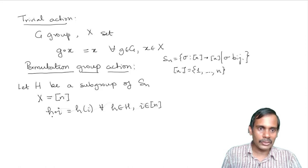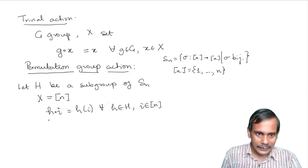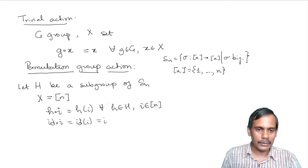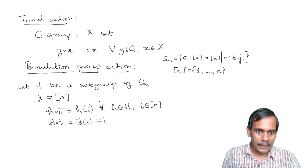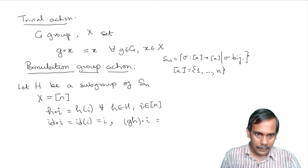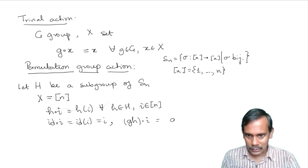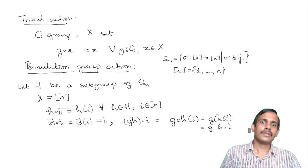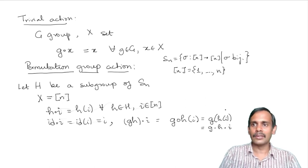It's easy to check that this is indeed an action. The identity acts as: identity of i equals i, since the identity element of S_N is the identity function. For compatibility, GH applied to i is G composed with H applied to i, which equals G applied to H(i), which is G dot (H dot i). So a permutation group gives rise to an action on the set {1,...,N}.